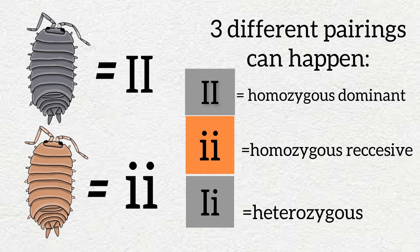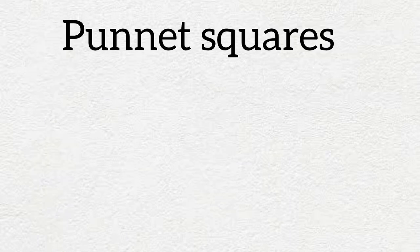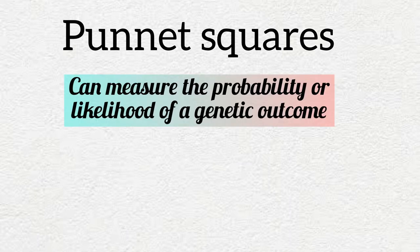But how do you find out the probability of what color the offspring will be when you breed these two isopods together? Let me introduce you to Punnett squares. Punnett squares are a tool that we can use to measure the probability or likelihood of a genetic outcome based on a specific genetic cross.